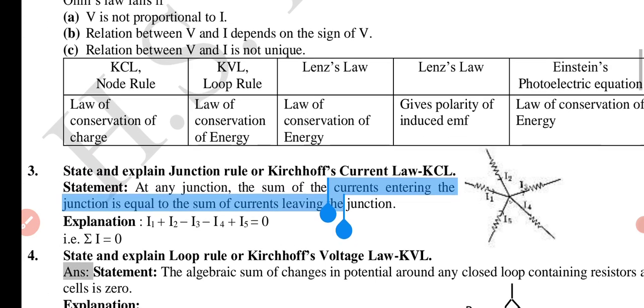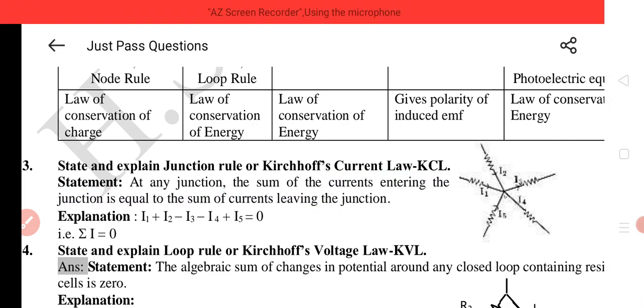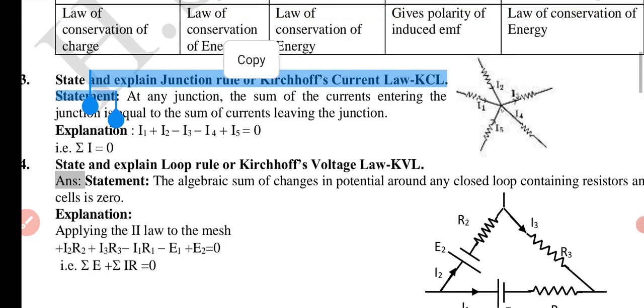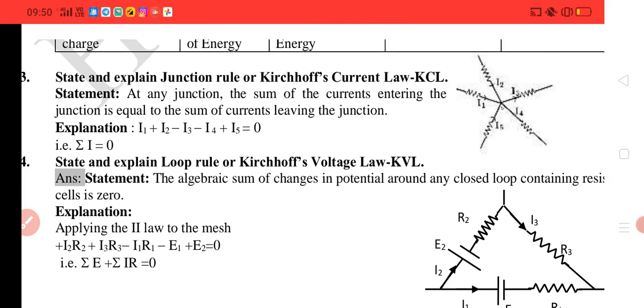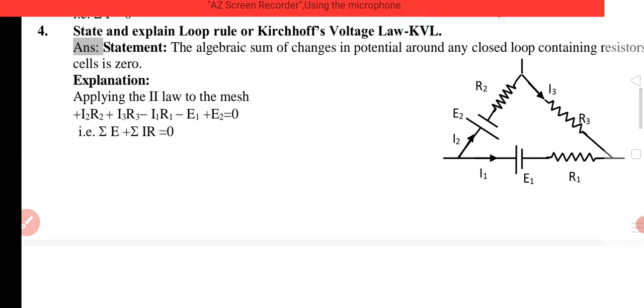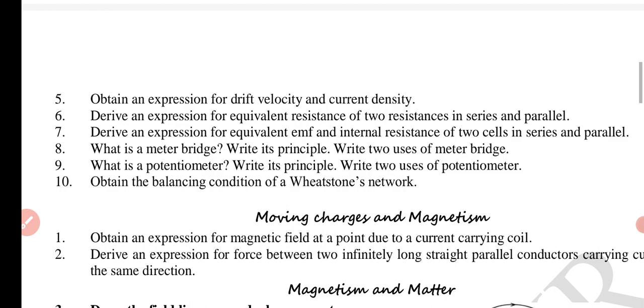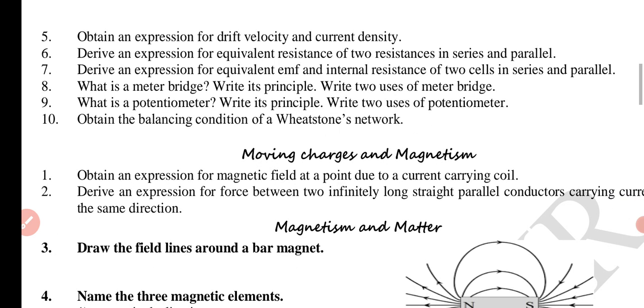State and explain junction rule or Kirchhoff's current law KCL. At any junction the sum of the currents entering the junction is equal to the sum of the currents leaving the junction. Explanation: I1 plus I2. Entering is plus, leaving is minus. KVL: Obtain an expression for drift velocity and current density, derive an expression for equivalent resistance of two resistances, expression for equivalent EMF and internal resistance. What is the meter bridge, right its principle, right two uses of meter bridge. Potentiometer, its principle, its uses. Obtain a balancing condition of a Wheatstone network.